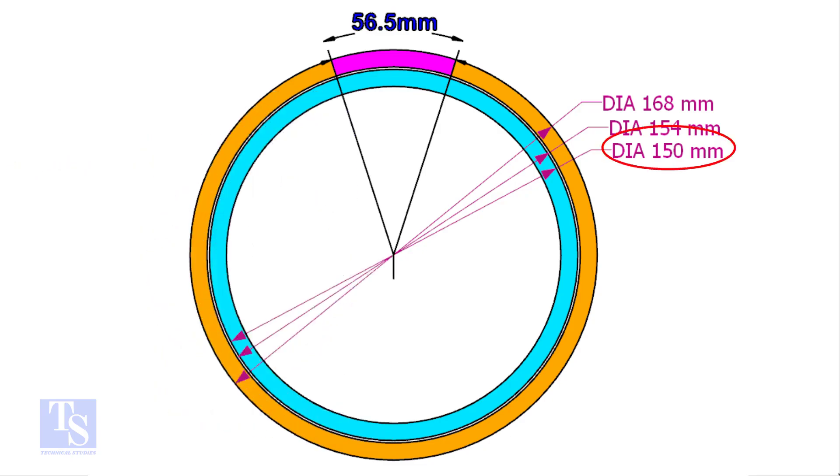The OD of the clamp shall be 4 to 5mm less than the pipe ID. This clamp OD is 4mm smaller than the ID of the 6 inch pipe.